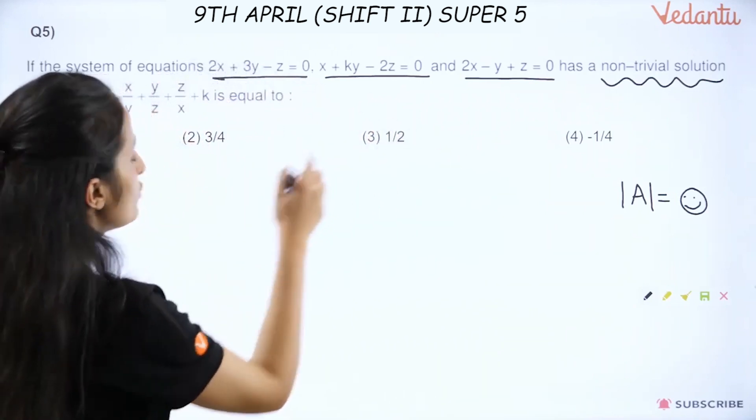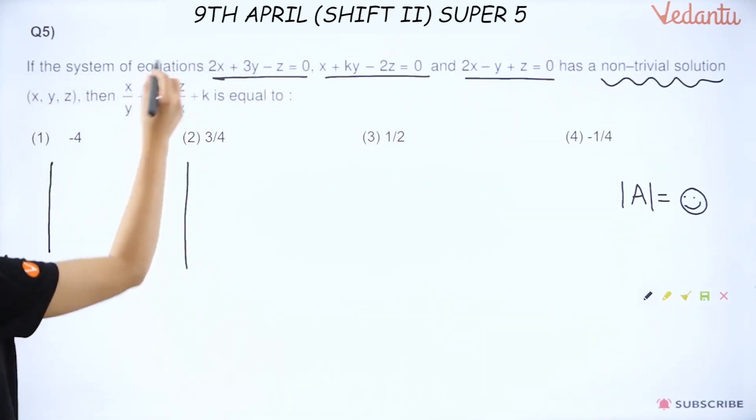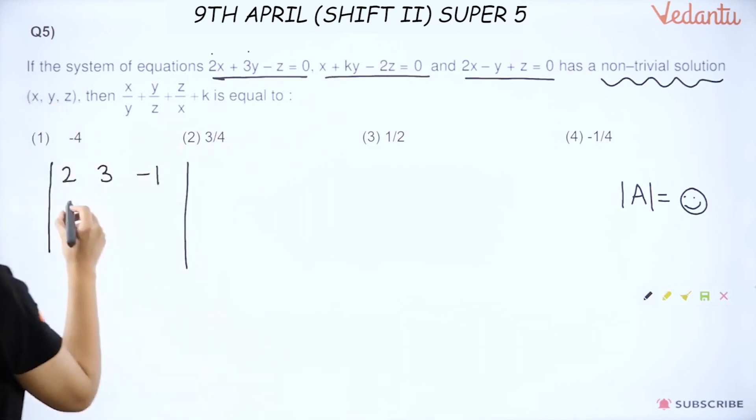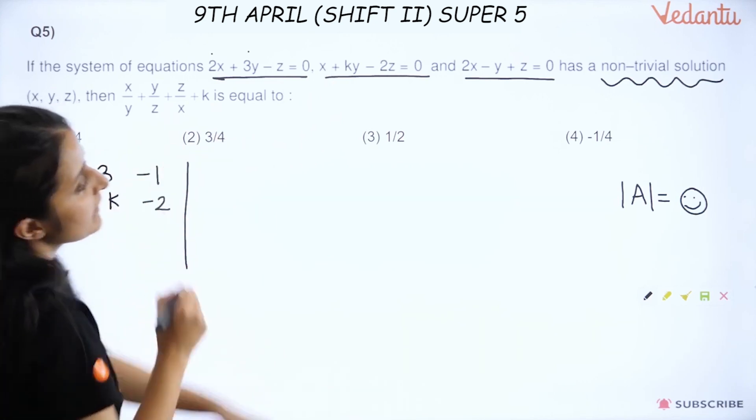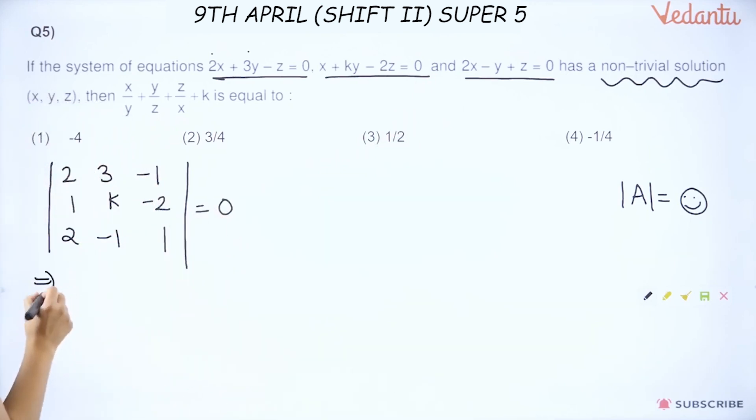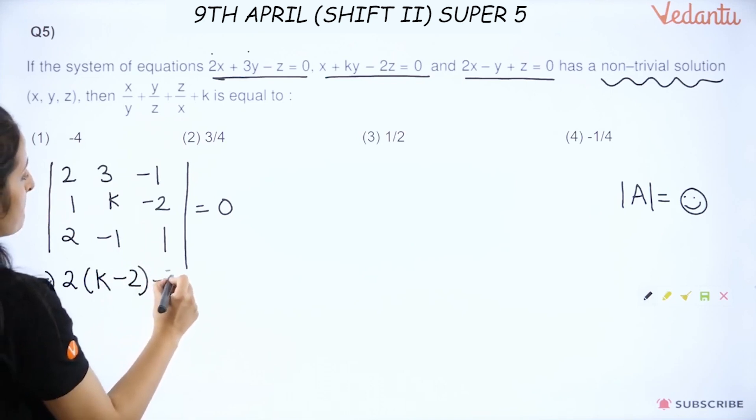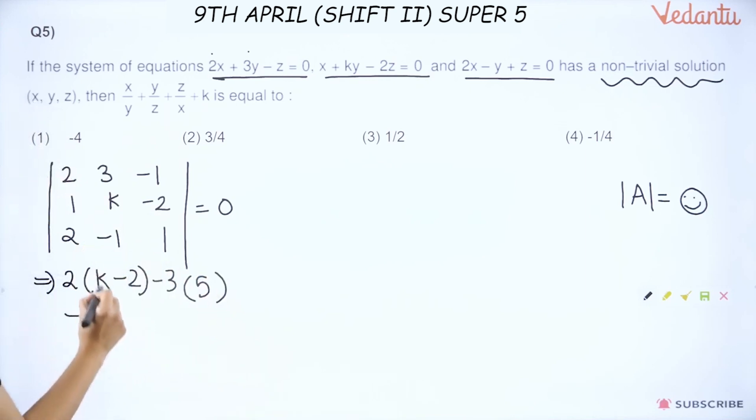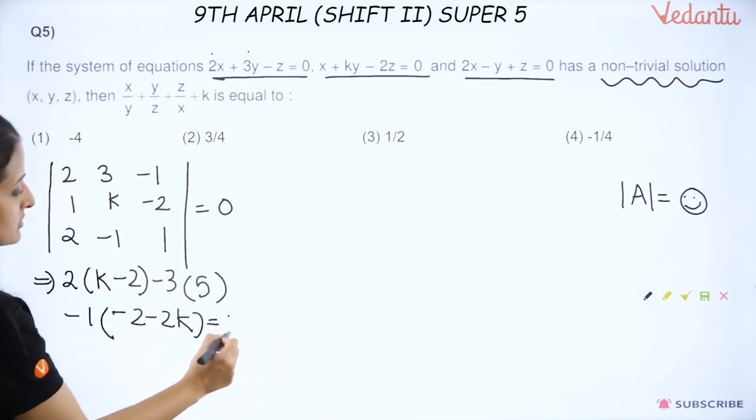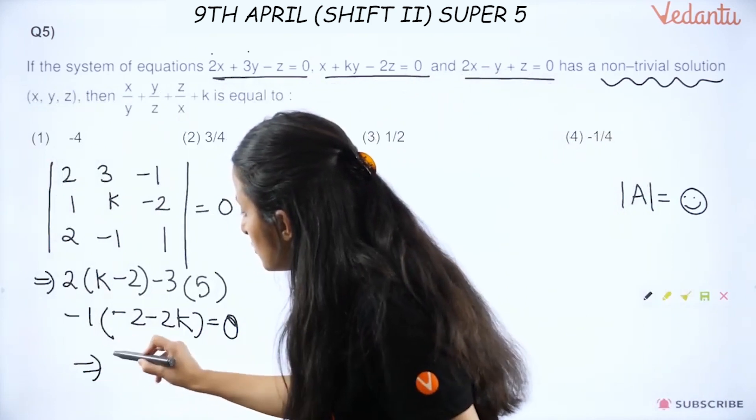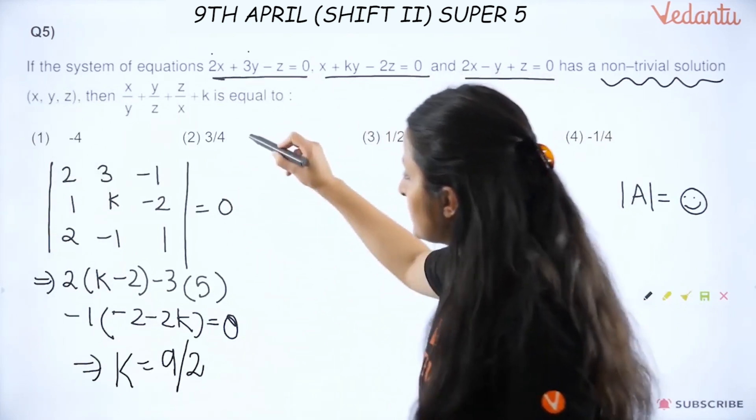So in this case I will take determinant of A. What is determinant of A? The coefficient matrix determinant. So this is |2  3  -1; 1  k  -2; 2  -1  1| = 0. So let's just open this. This will be k(-2) - (-3×1) which is k(-2) + 3 = -2k + 3. Then minus 3[1(1) - 2(-2)] = -3(1+4) = -15. Minus 1[-1 - 2k] = +1 + 2k. Setting equal to 0: -2k + 3 - 15 + 1 + 2k = 0.